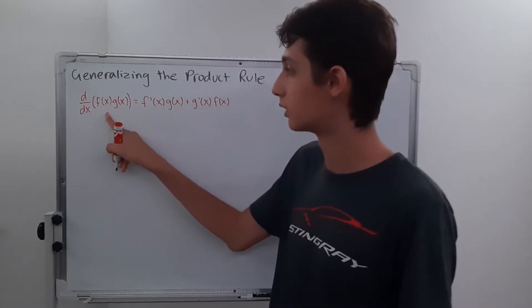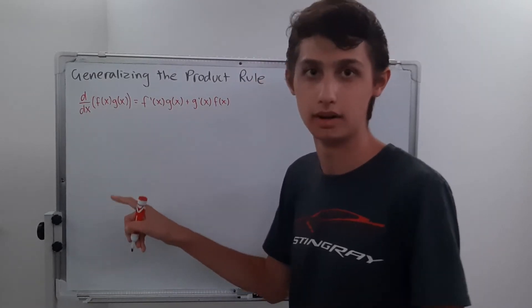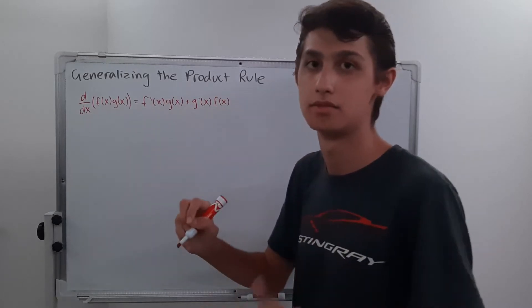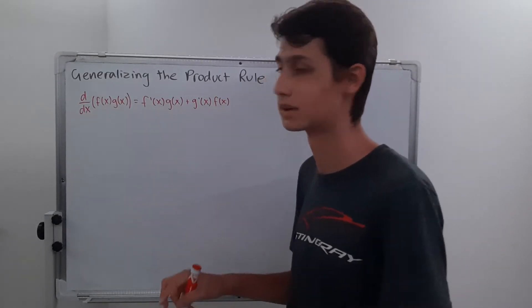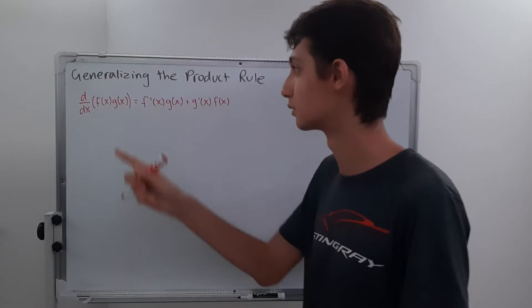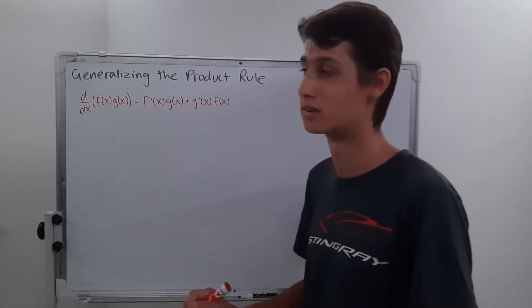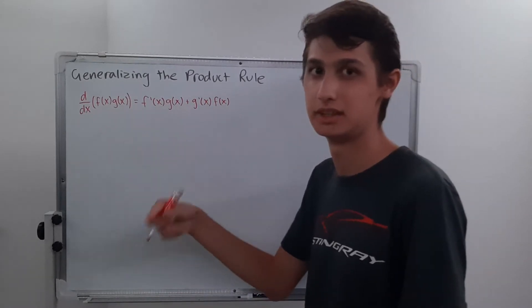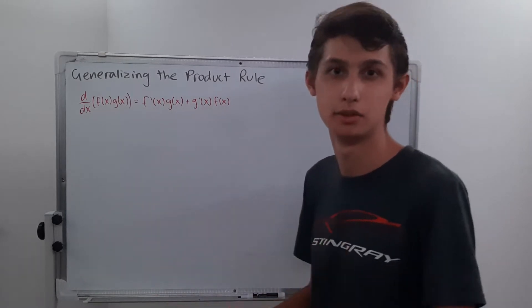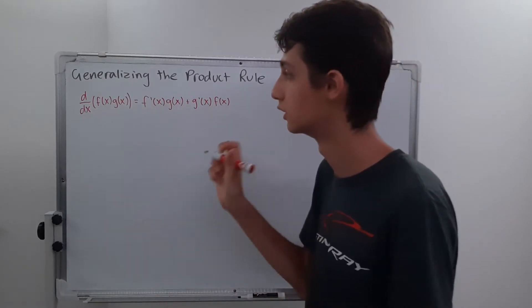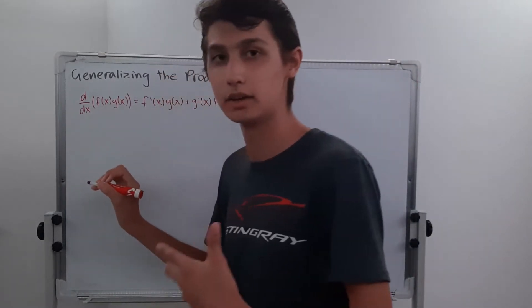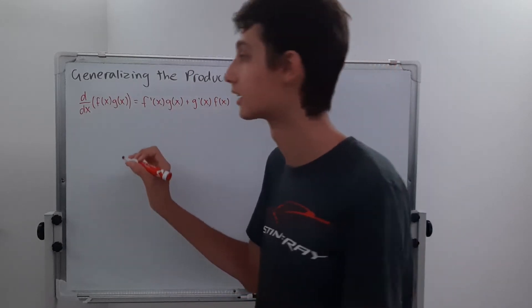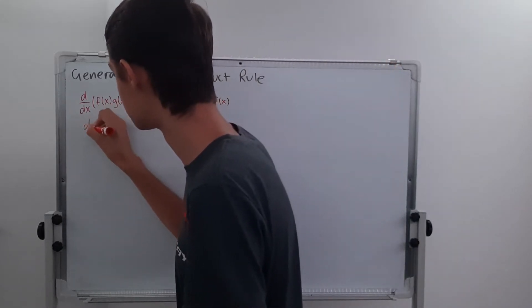We'll refer to these functions as f1, f2, f3, because we're going to have a lot more than just two functions — we're going to have n amount of functions. That's what this video is about: we're going to generalize the product rule. So it's not going to be f and g and h. It's going to be f1, f2, f3. Assume they're all functions of x, because I'm not going to write 'of x' every time.